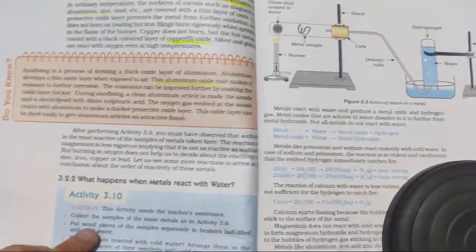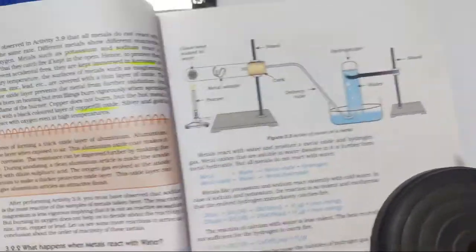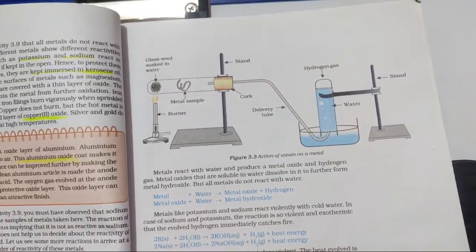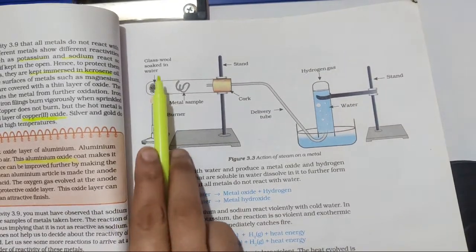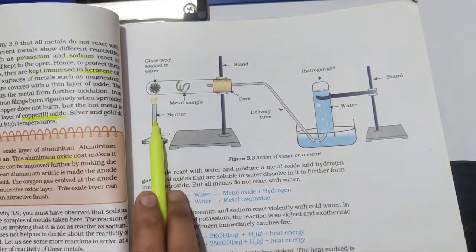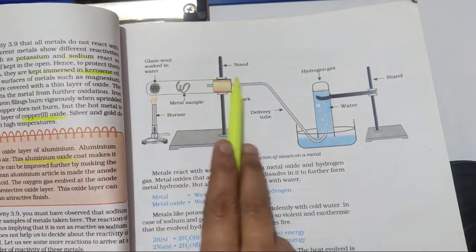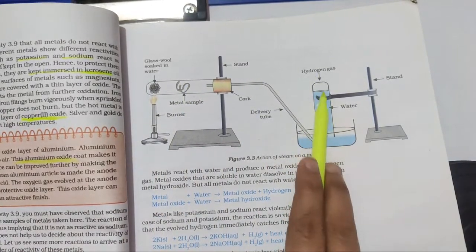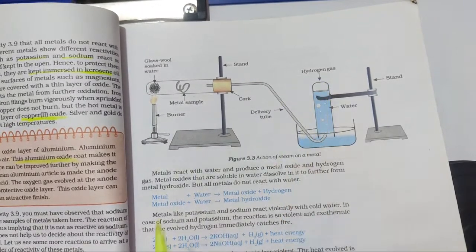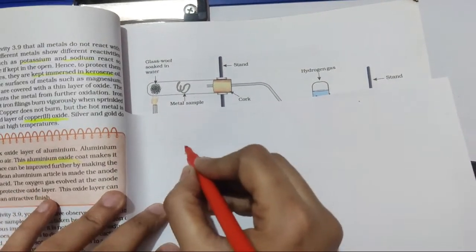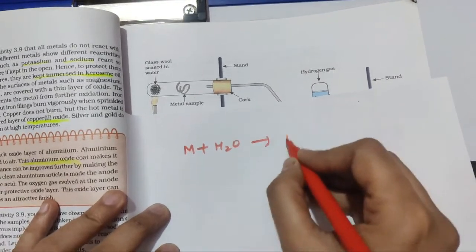Different metals have different reactivity with water — not all metals react the same way. In the experimental setup, steam is generated from glass wool soaked in water and heated; the metal sample reacts, and the gas produced (hydrogen) is collected by displacement of water. What happens when metal reacts with water: metal reacts with water forming metal oxide, then metal oxide dissolves in water to form metal hydroxide, releasing hydrogen gas.